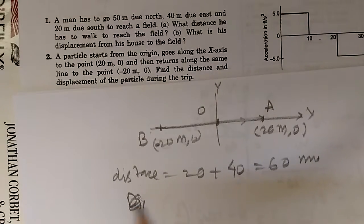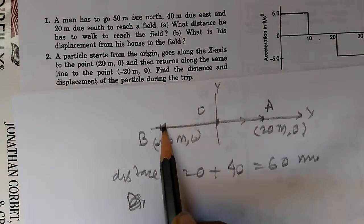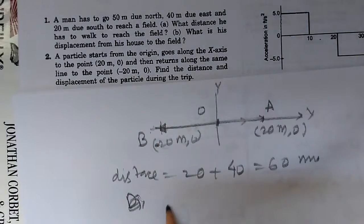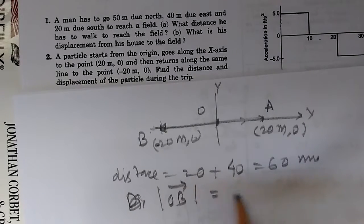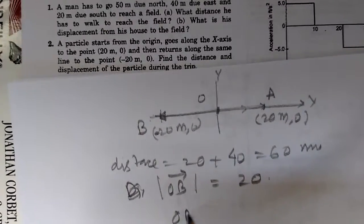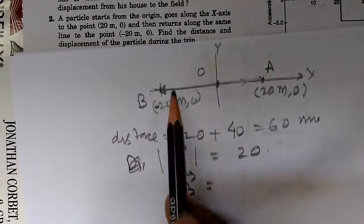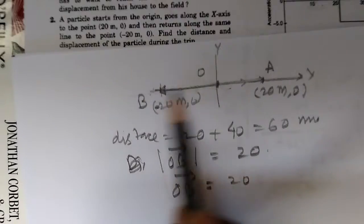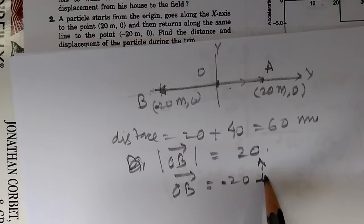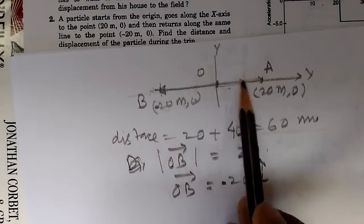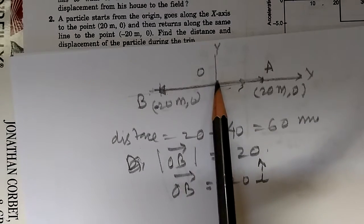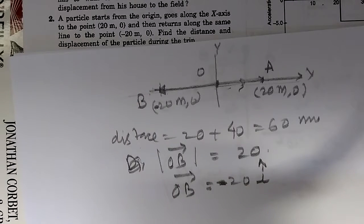Now if we want the displacement, let's call it OB vector. From here O, it finally reaches to B, so it is going to be the OB vector is the displacement. The magnitude of this OB vector is going to be 20. If I want to write the OB vector, one way to write it is the magnitude is 20, and since this is minus x-axis direction, you can write it as minus 20 into i cap, where i is the unit vector pointing to the x direction. You can also say that it is 20 meters on the x-axis in the negative x-axis direction.